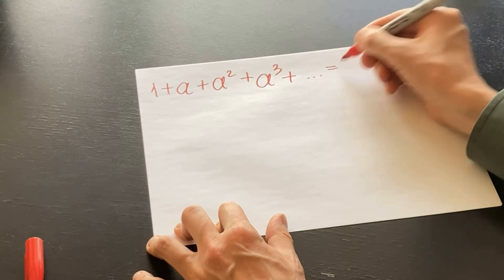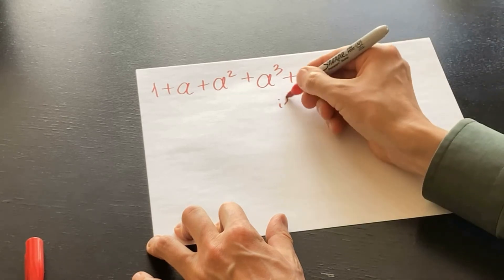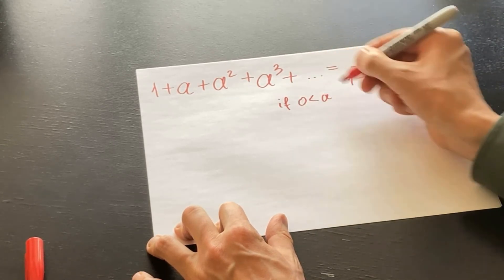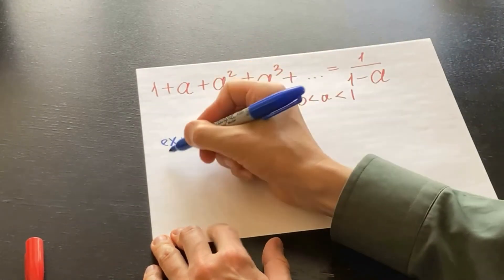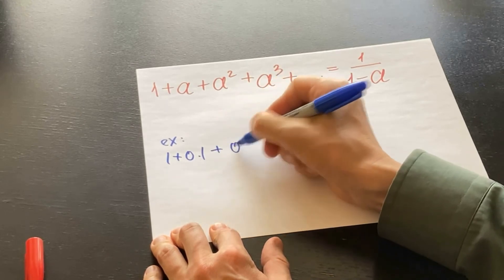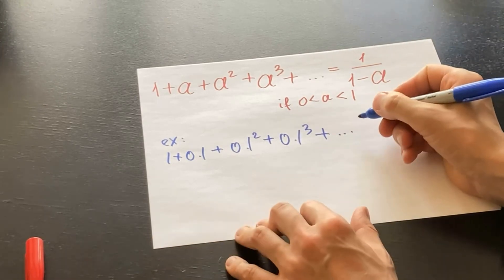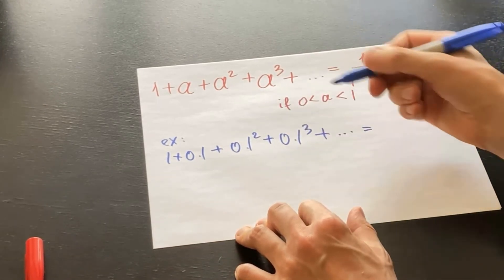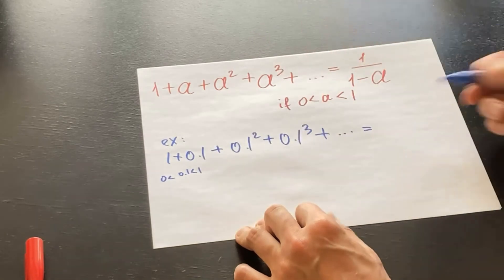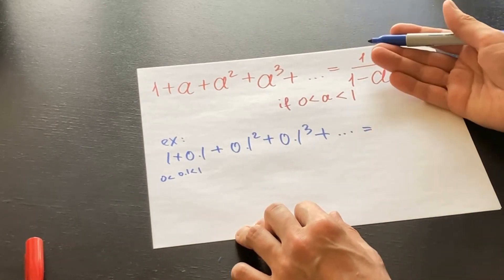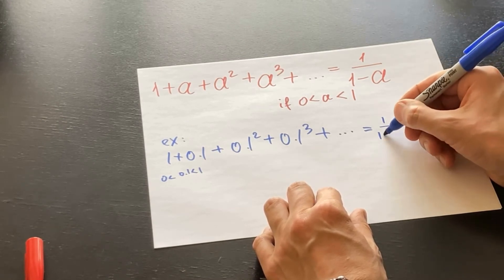Mathematics tells us that the geometric series 1 + a + a² + a³ + … to infinity equals 1/(1 − a), provided that a is between 0 and 1. For example, if a = 0.1, which is between 0 and 1, then the series equals 1/(1 − 0.1). This result applies to our series.